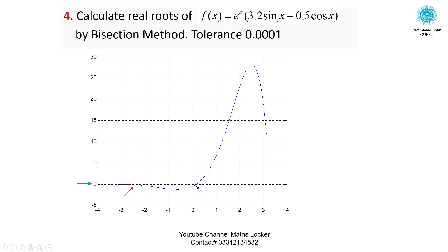Question Number 4: Calculate real root of f(x) = e^x(3.2sin(x) - 0.5cos(x)) by bisection method, tolerance 0.0001. Here is a root between -3 and -2, and here is the root between 0 and 1.